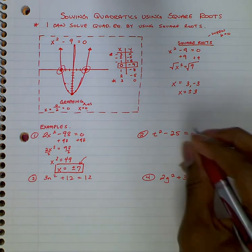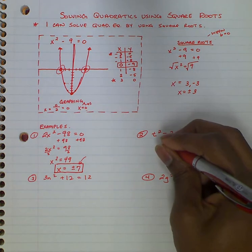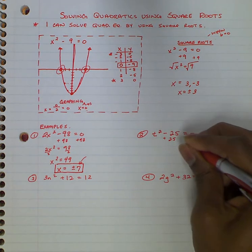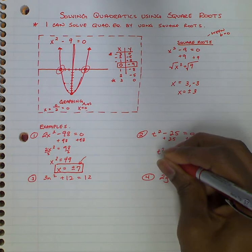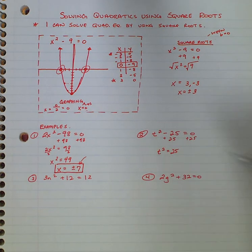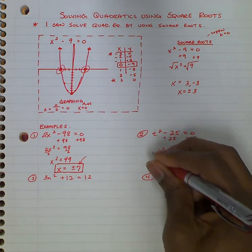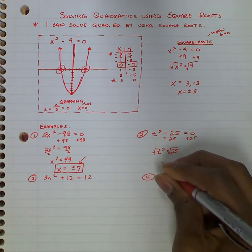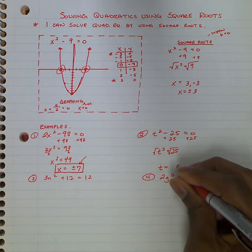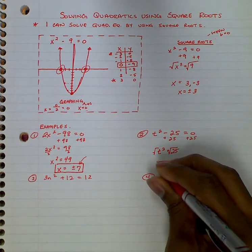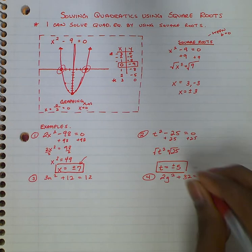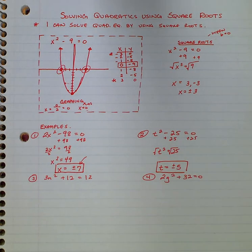Number two. Same kind of thing. We will add 25 to both sides. t squared equals 25. Take the square root to get t all the way by itself. And so t will equal plus and minus 5.